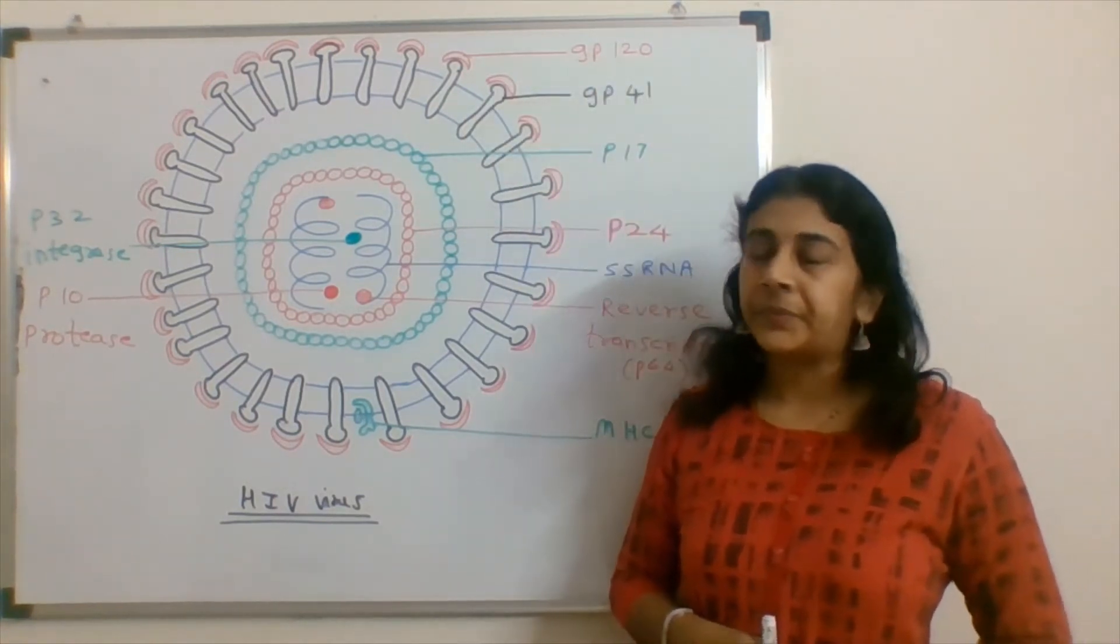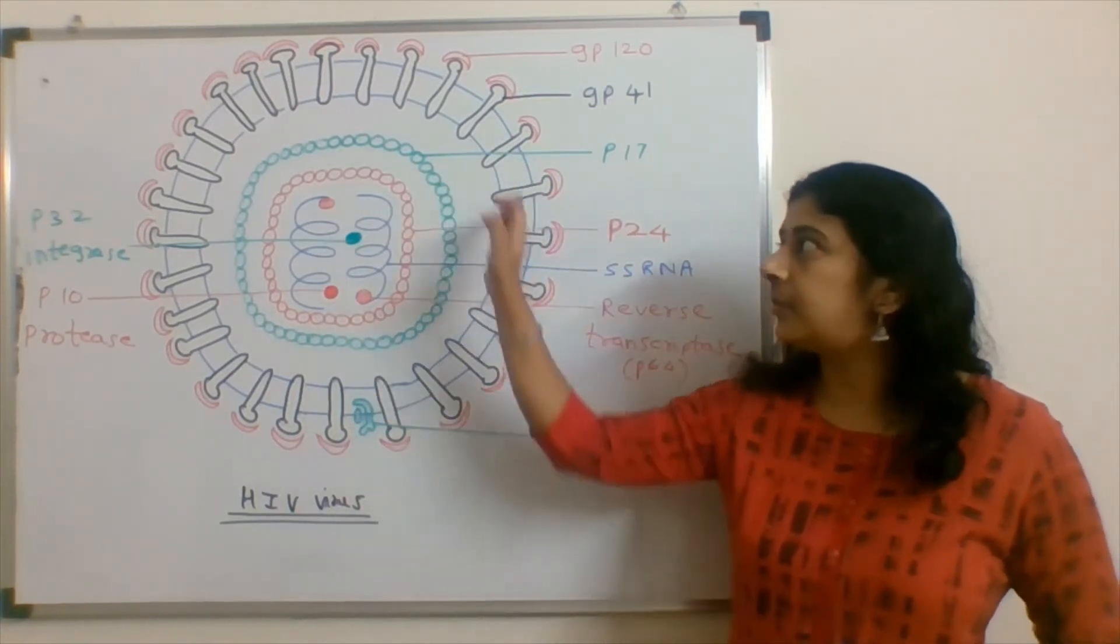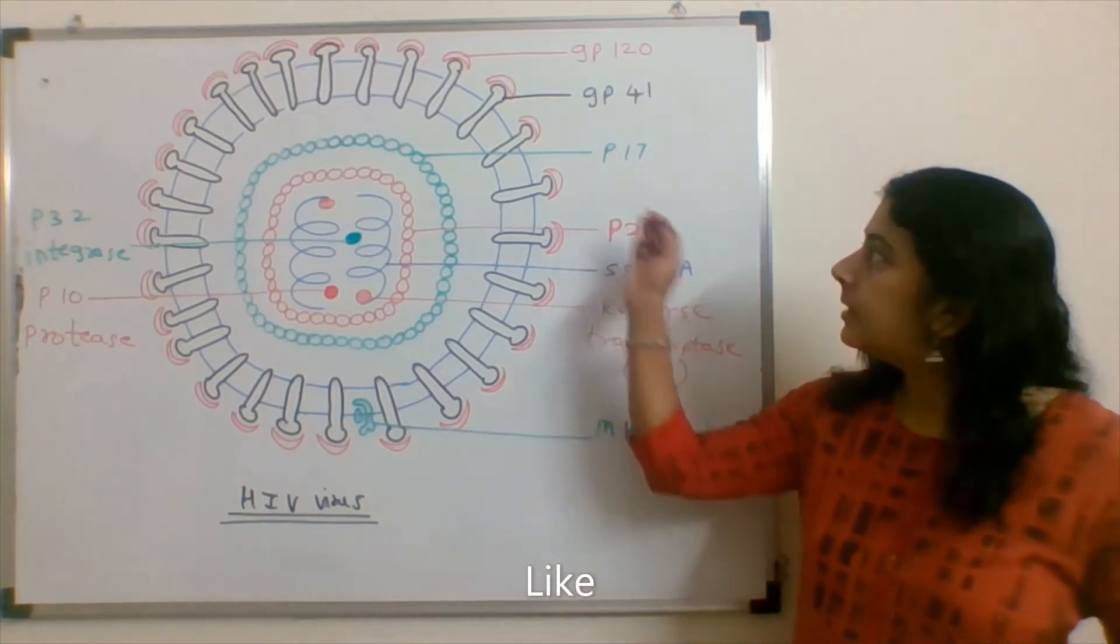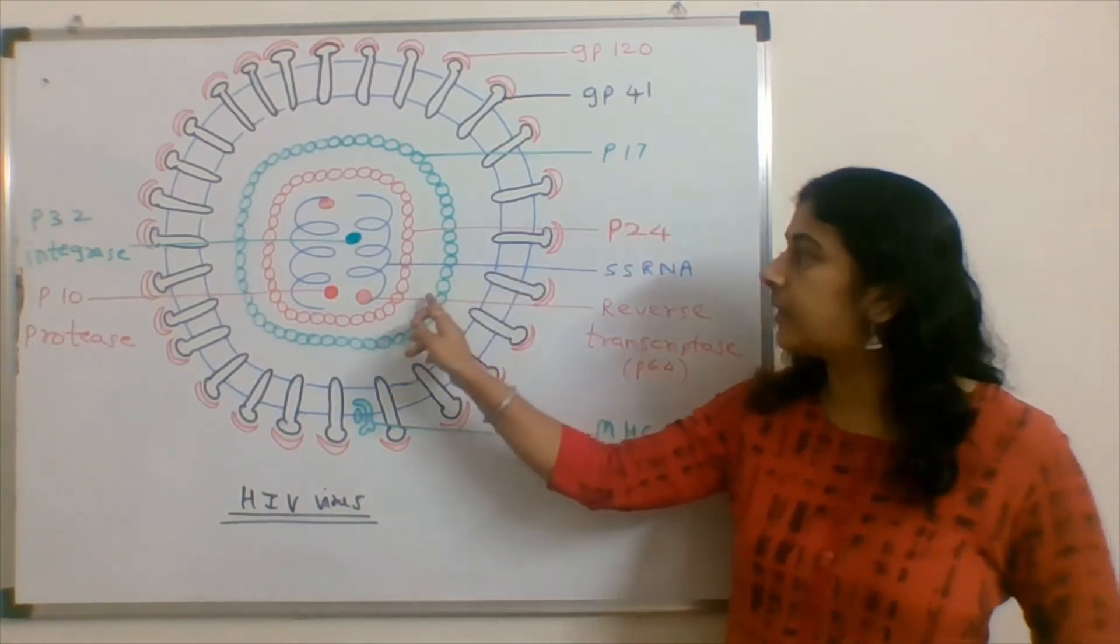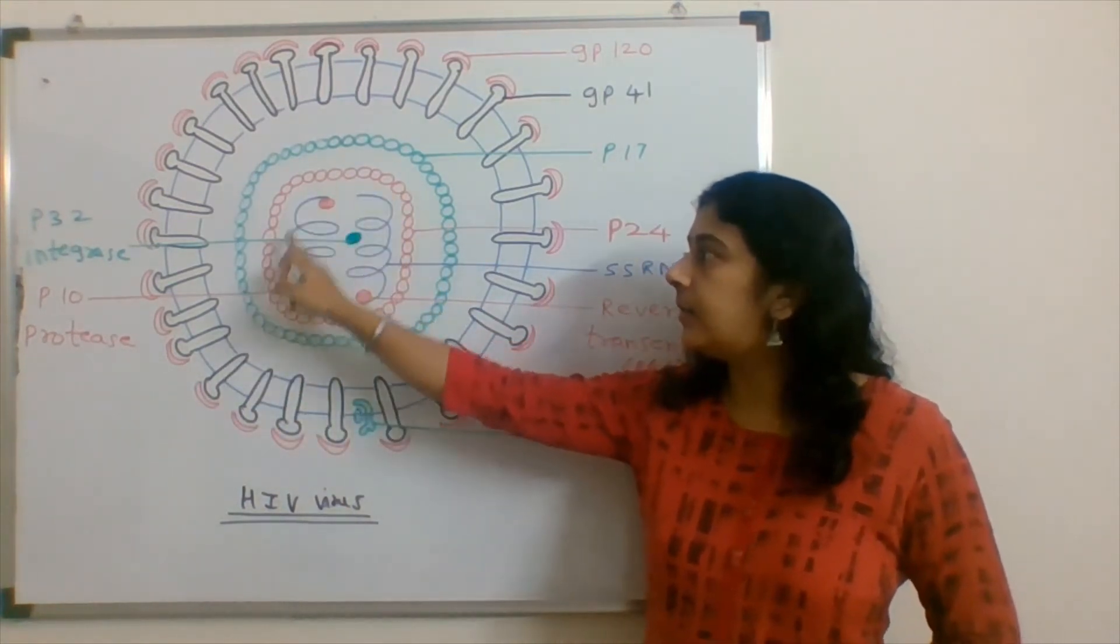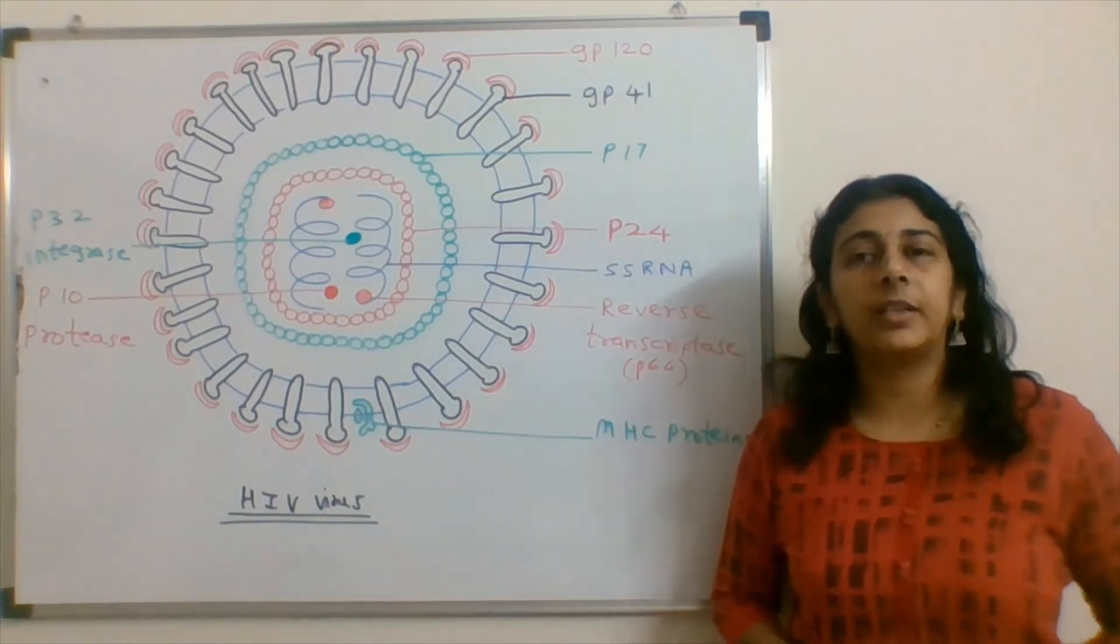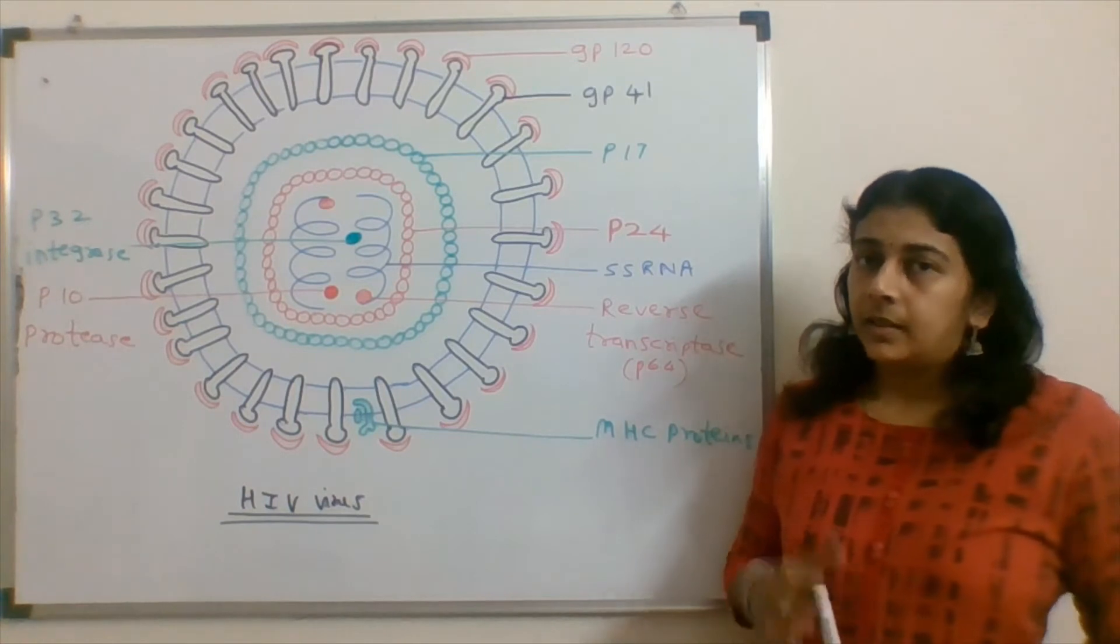Then there are P17 molecules here. P17 and P24, these proteins are viral capsid and the viral core is there.